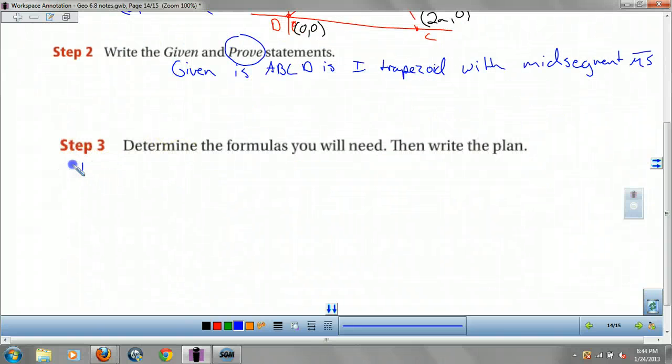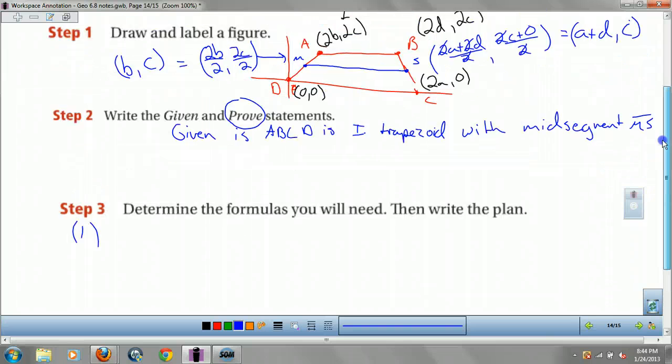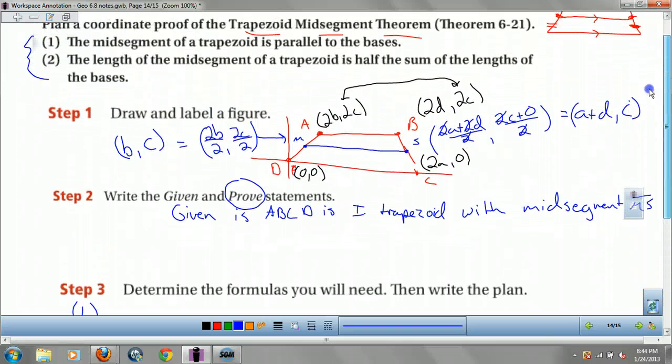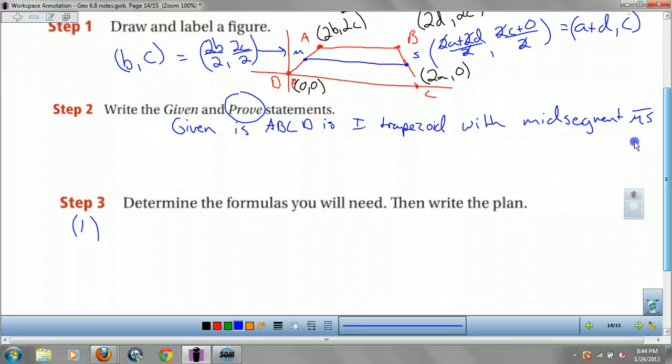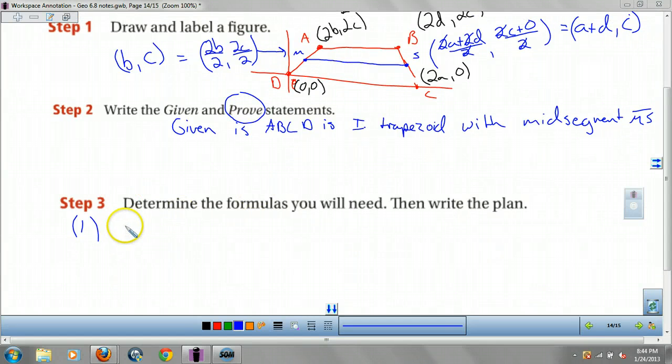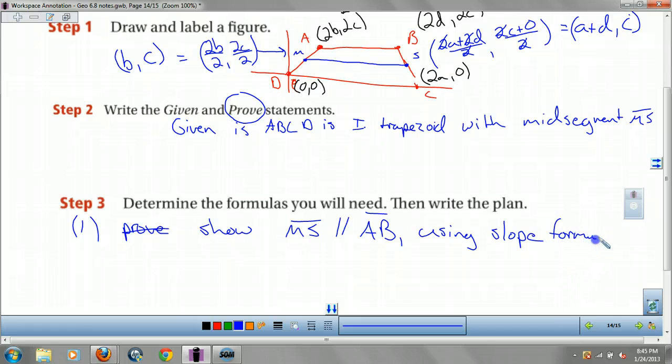For 1, we need to prove that they're parallel, right? So to do that we're going to have to show ms is parallel to AB. Okay? We're going to do that using slope formula. Slopes are equal, they're parallel.